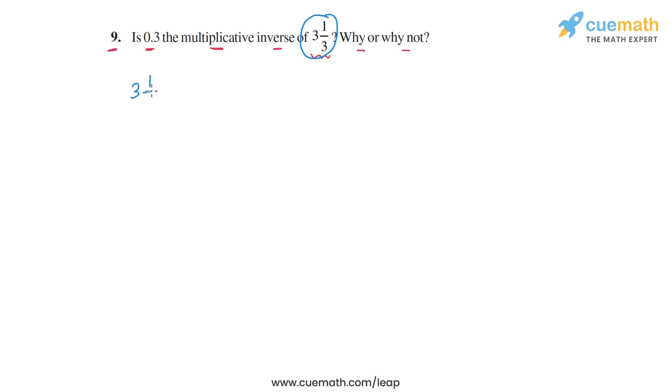So 3 and 1 by 3, we can write this as 3 plus 1 by 3. So this will be 3 into 3, 9 plus 1, or in the numerator we will have 10, 10 by 3.